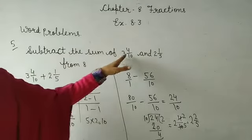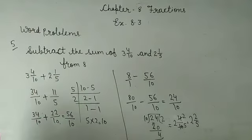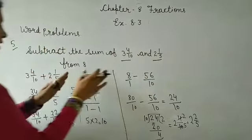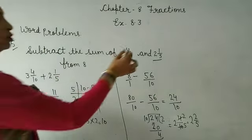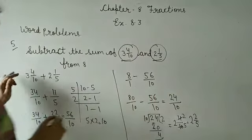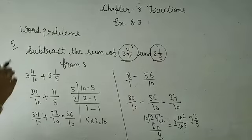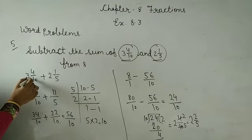Question 5: Subtract the sum of 3 and 4 upon 10 and 2 and 1 upon 5 from 8.